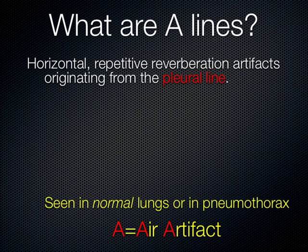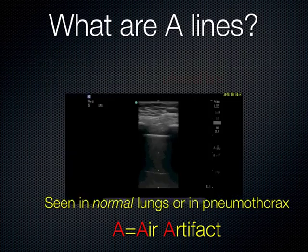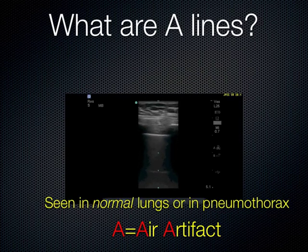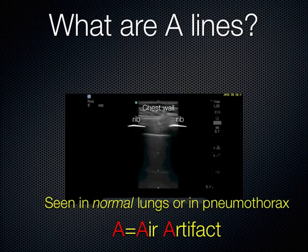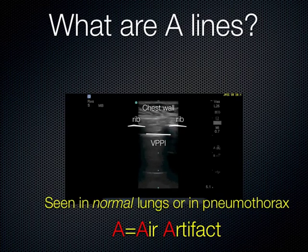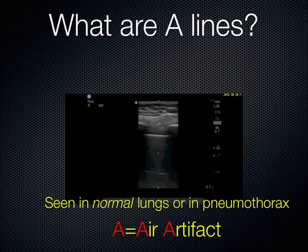You can see A lines in normal lungs or in pneumothorax, because A just means air — it doesn't tell you where the air is. The air could be in the lung in a normal situation, or it can be outside the lung in a pneumothorax. Here you can see the chest wall, the ribs with bright white cortex, the pleural line about a half centimeter below the ribs, and then down here the A line — a reflection of the pleural line deeper. That's artifact; it's not really there. The ultrasound waves get trapped in that bright white pleural line and reverberate back and forth.